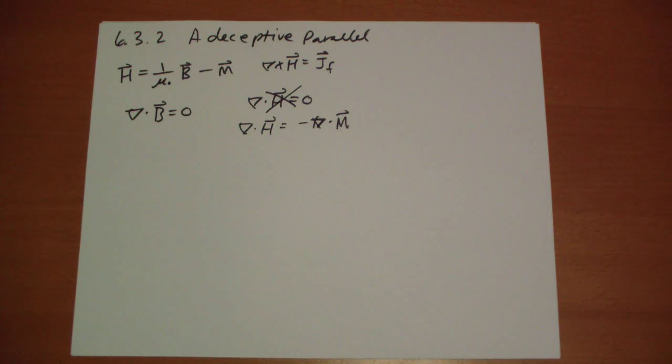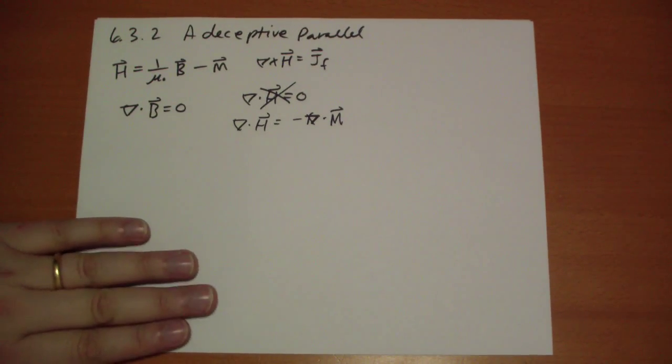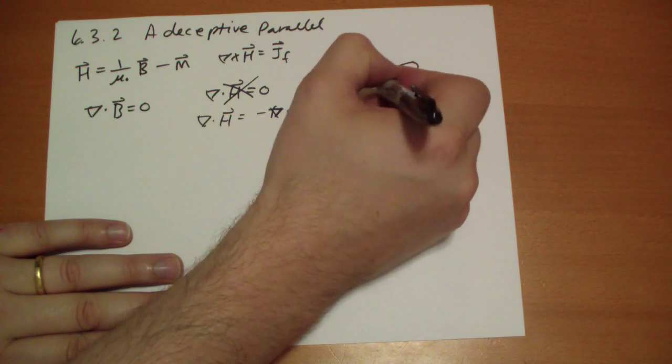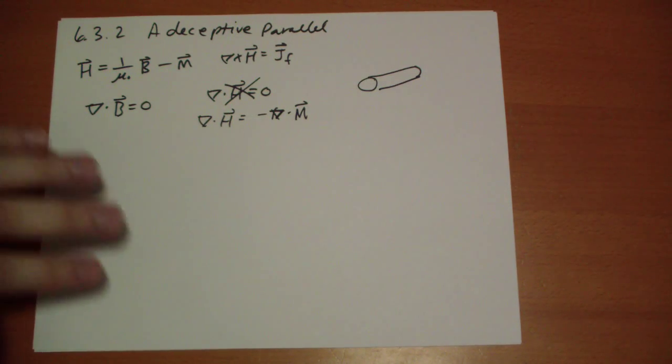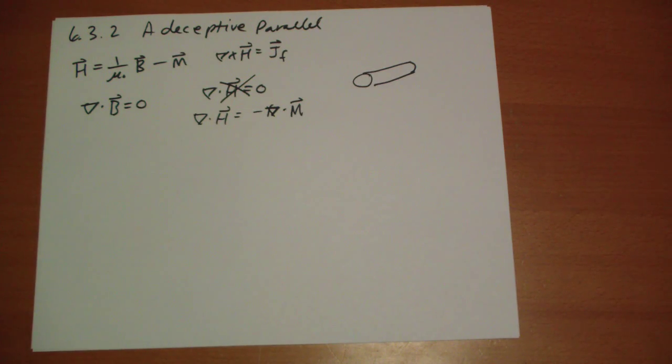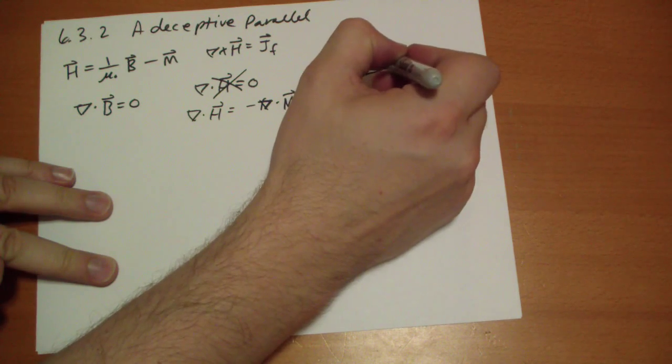And if you want a good example of where you're going to get an H field, even though you don't have any free current, let's take a cylinder that is magnetized. So let's use a different color for magnetization. Uniform magnetization, M vector.